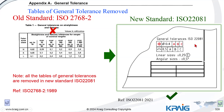This means for each component the general tolerance values will be different — we are not going to use a common standard table. You put specific general tolerance for that specific component based on function. This is what the new standard recommends, and all the old tables have been removed.